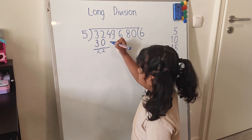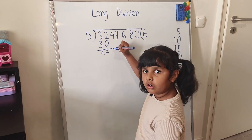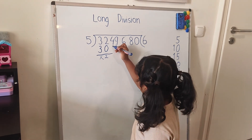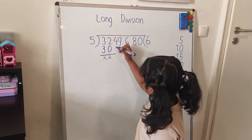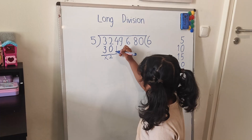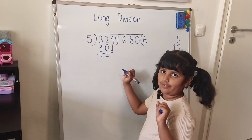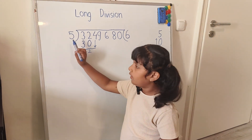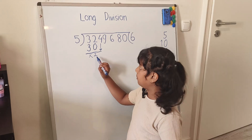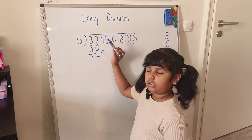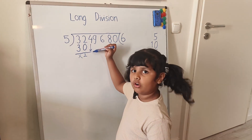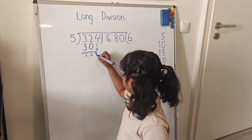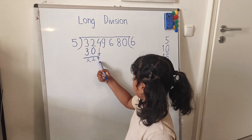Okay, then I will take down 4. So I will take down here 4. Here is a 5 and here is a less number, so I will take down a 4. So I will add here 4. Now it's a 24.